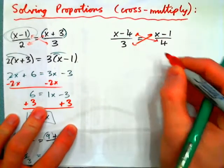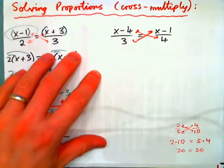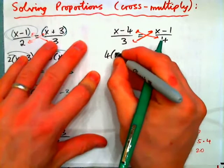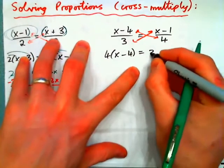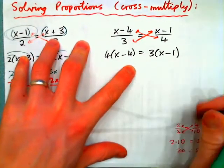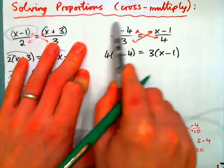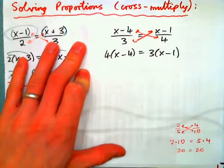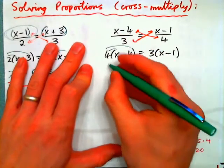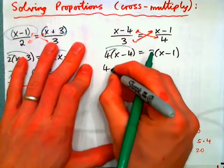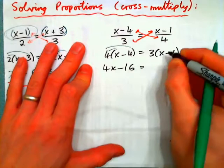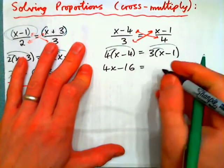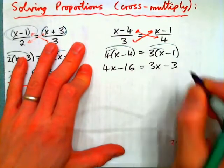Cross multiply. And we should have 4 times x minus 4 equals 3 times x minus 1. So, this 4 is multiplied by the entire top of this fraction. This 3 multiplies by the entire top of this fraction. Now we distribute and we get 4x minus 16 equals distribute the 3, 3x minus 3.